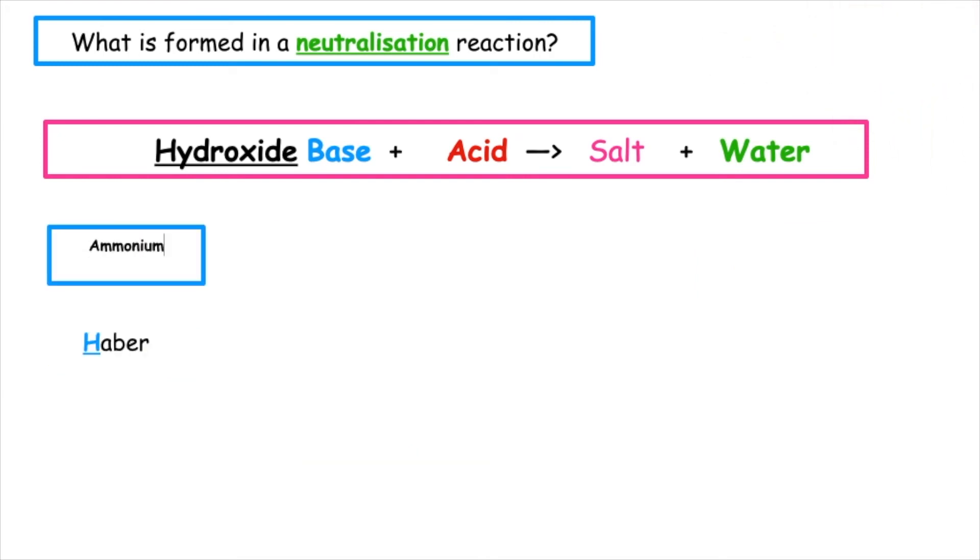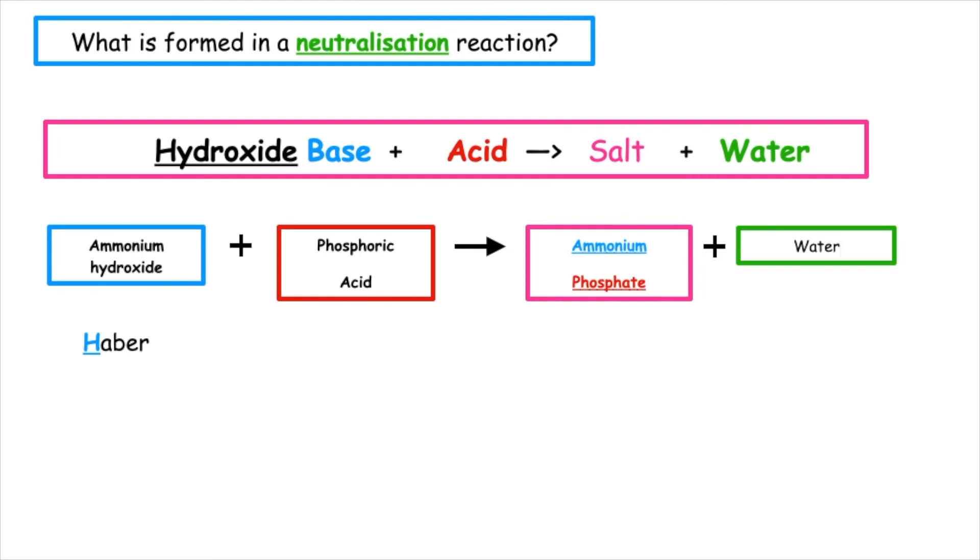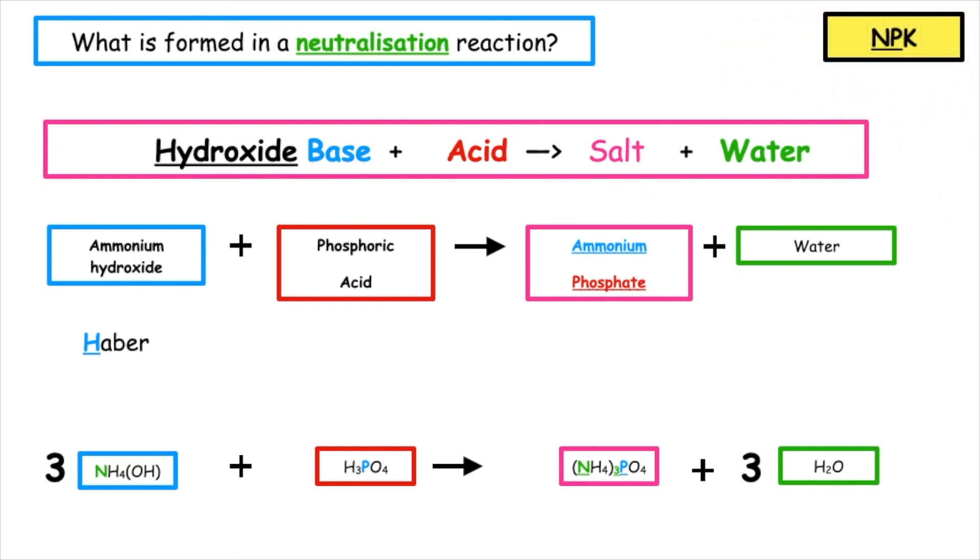To take the ammonium hydroxide which is a base produced in the Haber process and react it with phosphoric acid, the name of the salt which is our fertilizer produced would be ammonium phosphate. We would also produce the by-product water. The formula for ammonium phosphate is NH4 in brackets times by three, so we've got three of those, PO4. The essential elements found inside this fertilizer are nitrogen, N and phosphorus, P.